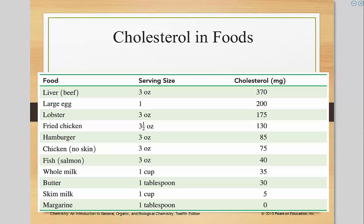Here are some cholesterol levels of common foods. A large egg has 200 mg of cholesterol for one serving. A hamburger actually has 85, whereas skim milk only has 5.